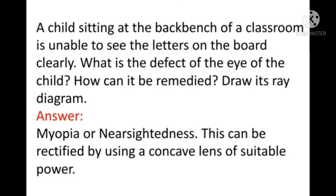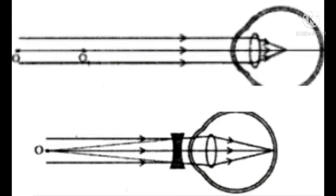This is short sight, also called myopia. It can be rectified by using a concave lens of suitable power. The first picture shows the myopia case where the image is formed in front of the retina. In the second picture, a concave lens is used and the image is then formed correctly on the retina.